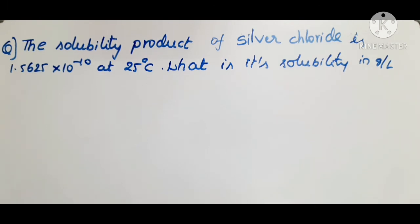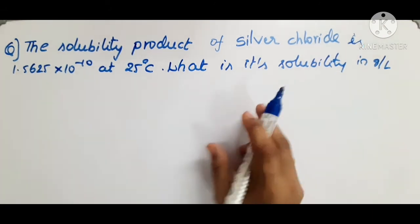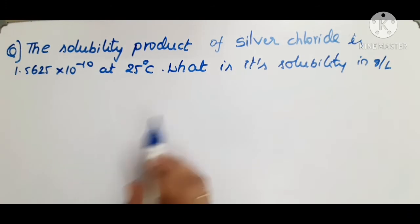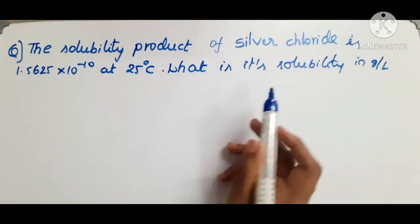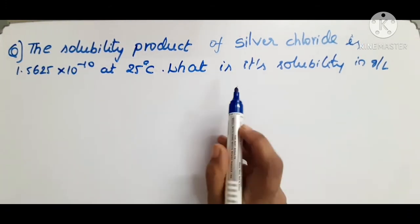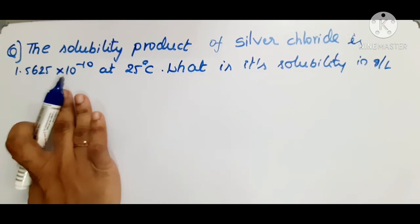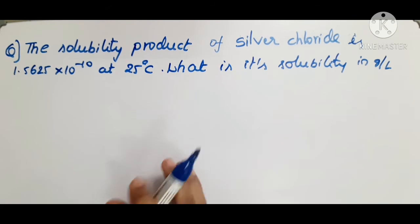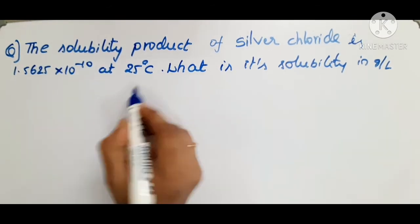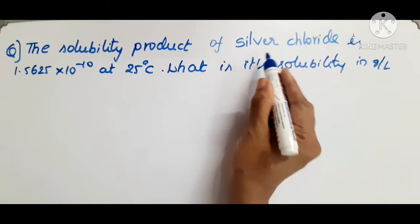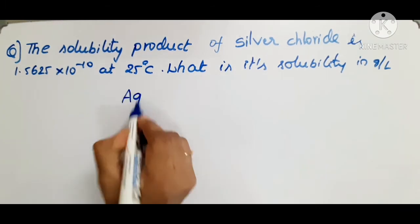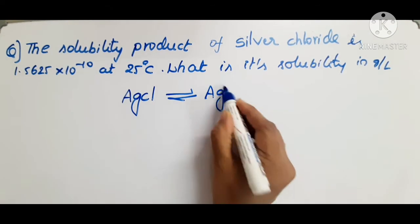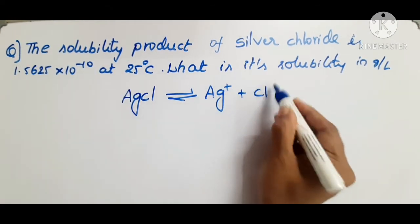The solubility product of silver chloride is 1.5625 × 10⁻¹⁰ at 25°C. What is its solubility in grams per liter? When you have this type of problem, the first thing you have to do is write down the equation. AgCl ionizes to Ag⁺ plus Cl⁻.